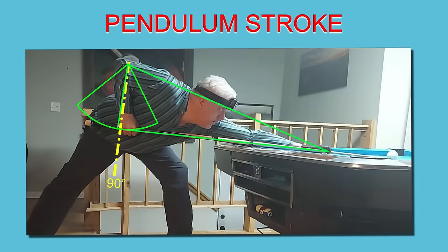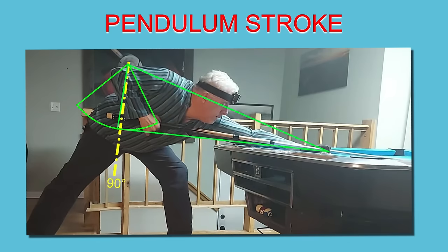Compare to this shot with the same bridge length, but this time my grip hand is a little bit forward of 90 degrees. What happened?